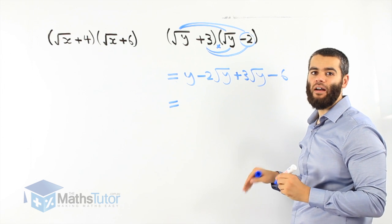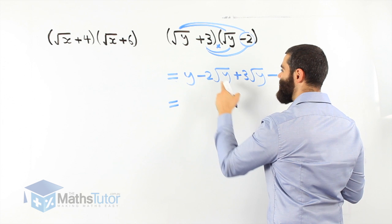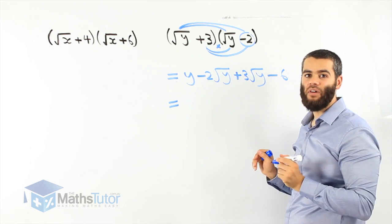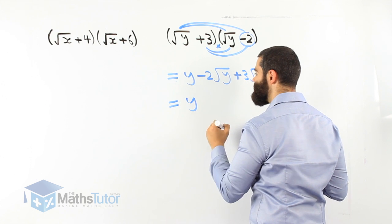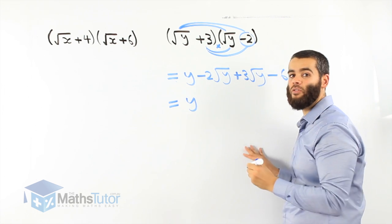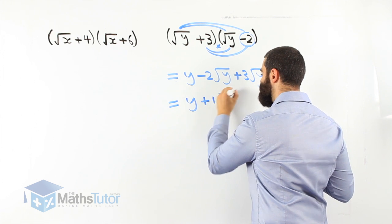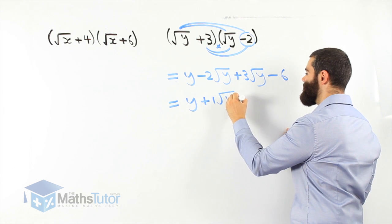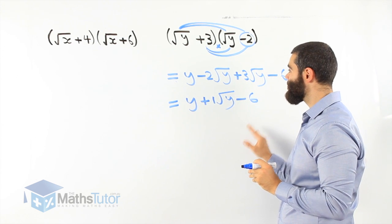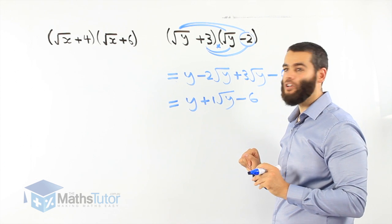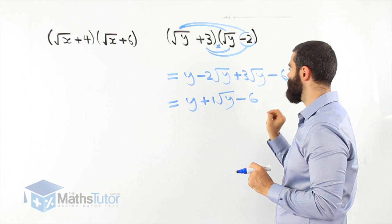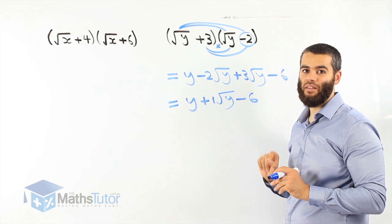Can we simplify any further? Yes we can. Negative 2 root y plus 3 root y — they are like surds, so we can simplify them. We write this as y, then negative 2 plus 3 is positive 1, giving us positive 1 root y, and then minus 6. That's our simplest answer. It's very important to concentrate and look for like terms — in this case like surds: minus 2 root y plus 3 root y.